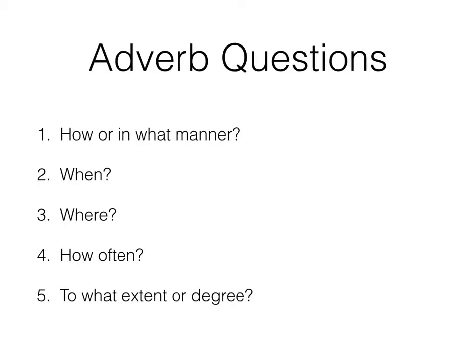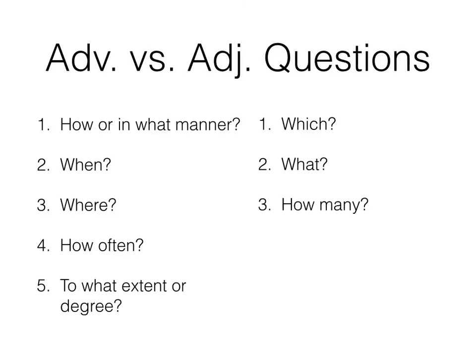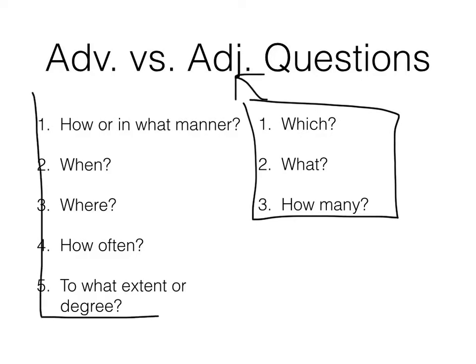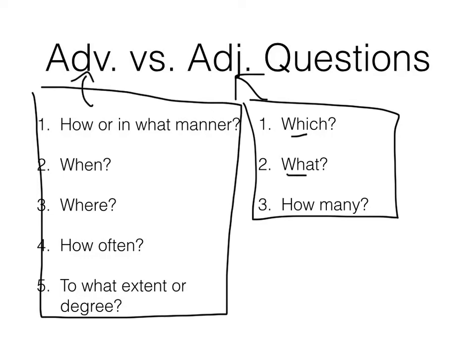Here are the five adverb questions: how or in what manner, when, where, how often, and to what extent or degree. We also have the adjective questions: which, what, and how many. They're different from the five adverb questions. There are some similarities — we see the WH words, so those might get confused, and how often compared to how many. But if we remember those questions, they will help us learn the difference between identifying adjectives and adverbs in a sentence.